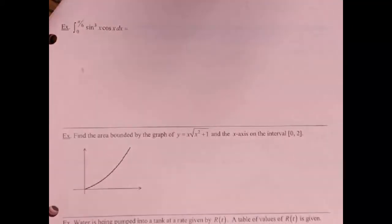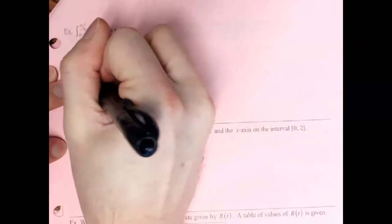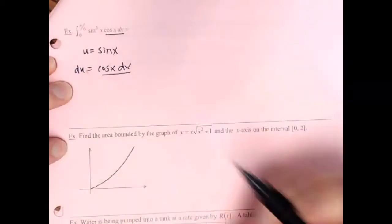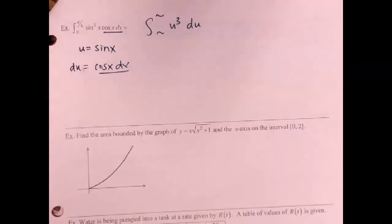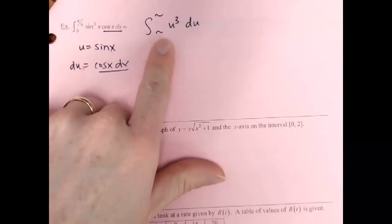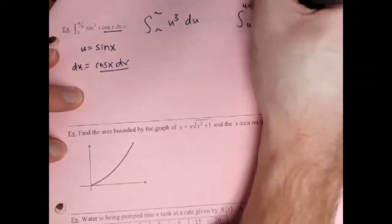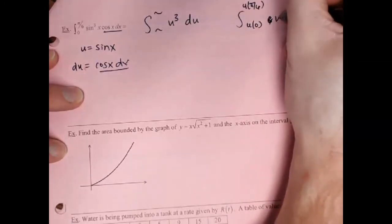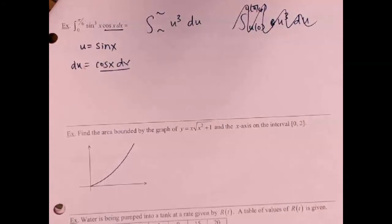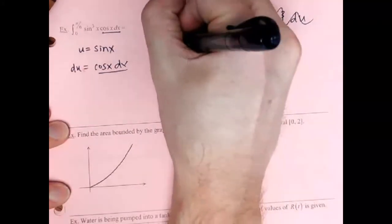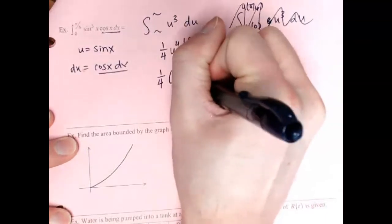Next: integrating sine³x·cosx. Here we have sine and cosine — the one with something happening to it is your u, so u = sin x. The cosine x dx matches the derivative perfectly. Switching over: integration from squiggle to squiggle of u³ du — or you could use u of 0 and u of π/6 as placeholders. Integrate to get (1/4)u⁴, then reverse substitute back to x: (1/4)sin⁴x.